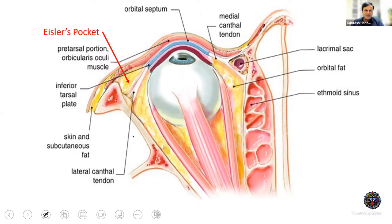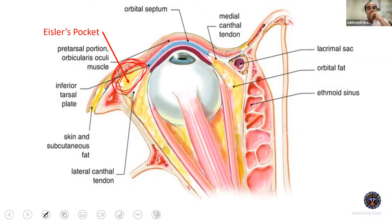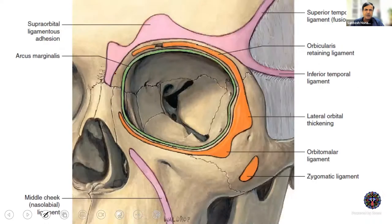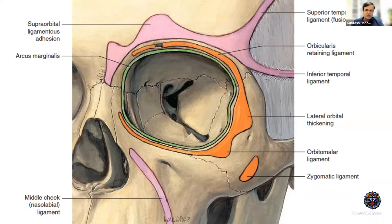Eisler's pocket is an anterior pocket of fat lying between the lateral canthal tendon and the septum on the lateral side. This triangular fat pad may extend anterior to the orbital margin but is generally confined to the level of the orbital ring. It may cause lateral bulge, and if a patient wants relief, you explore for Eisler's pocket and excise that fat. Beyond arcus marginalis there is also a supraorbital ligamentous adhesion anchoring soft tissues to the facial skeleton; knowledge of these attachments is useful in facelifts.